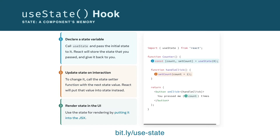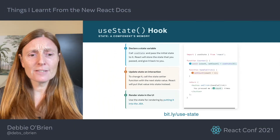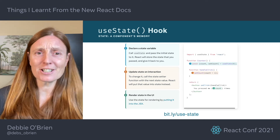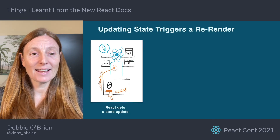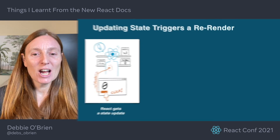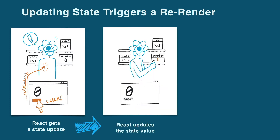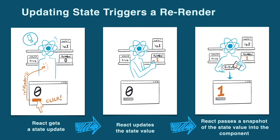UseState is a hook that allows you to update the state and trigger a render with a new value. The steps start with declaring a state variable, updating the state on interaction, and rendering the state in the UI. It even told me that the square brackets in step one is just array destructuring. This illustration from the docs shows how in React, updating the state triggers a re-render. When the user clicks the button, React gets a state update of setNumber, then updates the state value, passes a snapshot of the state value into the component, and the button component is rendered with a new value.